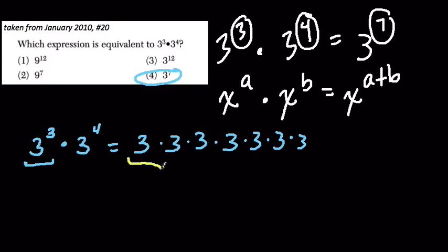If we look at this, we can see that 3 to the 3rd is right here. That's 3, 3s that we're multiplying, and here we have 3 to the 4th. That's 4, 3s that we're multiplying. So altogether, what this is saying is that we're multiplying 3 plus 4, 3s. It's 3 to the 7th.